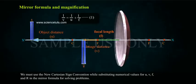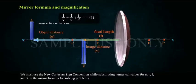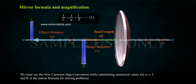We must use the new Cartesian sign convention while substituting numerical values for U, V, F, and R in the mirror formula for solving problems.